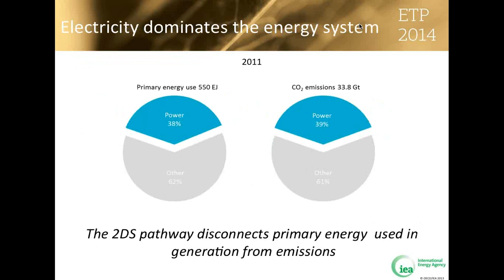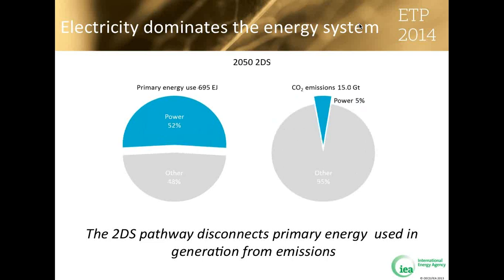The growth of electricity use is not necessarily a positive development. We must actively manage this transition to support global goals for economic, secure, and low-carbon energy. Today, electricity generation consumes nearly 40 percent of global primary energy and produces 40 percent of global emissions. If we continue as we are, these trends will only increase. In the 2-degree scenario, the power sector consumes over 50 percent of primary energy, but much of that comes from renewable or low-carbon sources, and electricity contributes only 5 percent of global emissions — the electricity system is largely decarbonized.